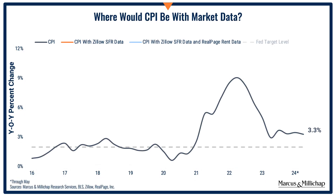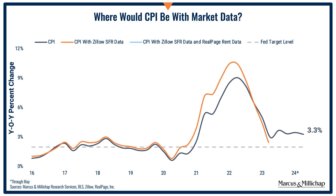But here's another idea. Instead of using a survey of renters' actual rents to calculate inflation — a methodology that was set up in 1981 when computers were in their infancy and there was no internet — maybe the BLS should be using asking or effective rents from the numerous data services that are now available. If they used, for example, Zillow to calculate the owner's equivalent rent, then today's CPI inflation would be about 3%.